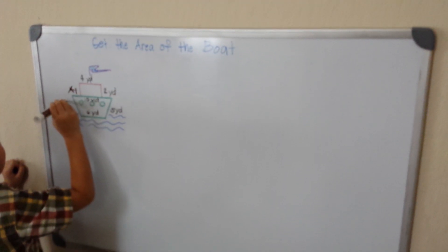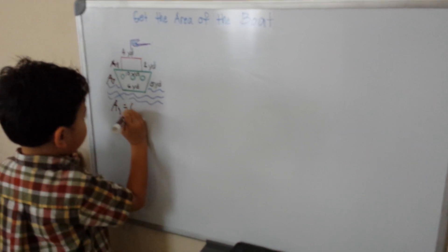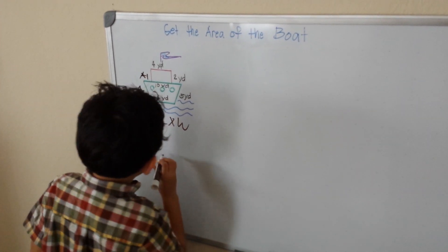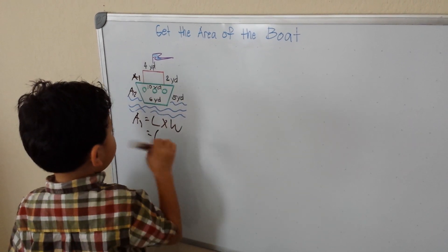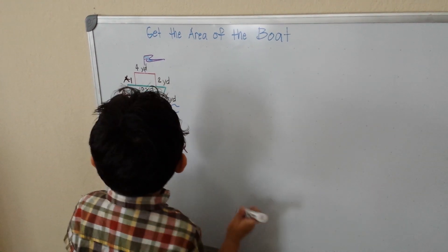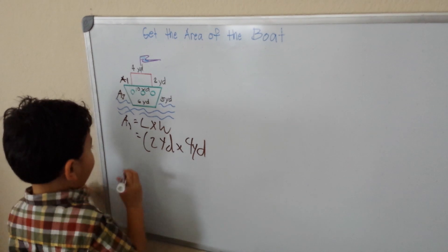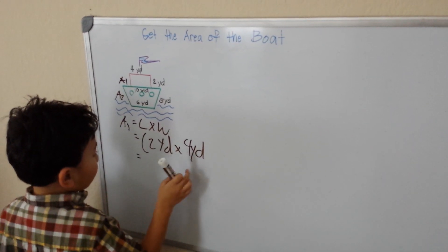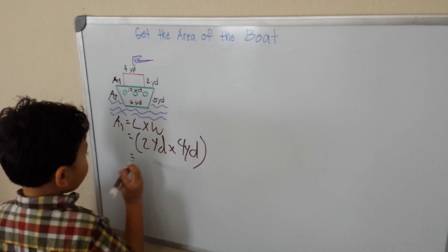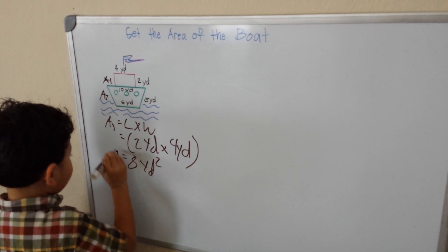So here is my area one and here is my area two. My area one is equal to my length times width. Now we have our length is two yards times four yards, so that would be two times four is eight yards squared. That's our area one.